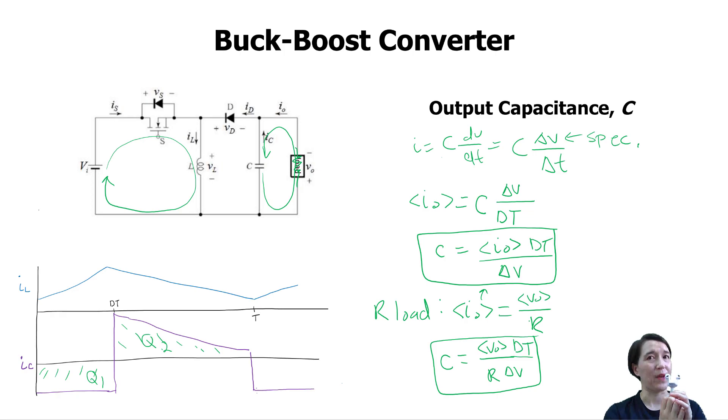And if we want to make it more specific to a resistor load, then we can put in the resistance value, and then we need to know the output voltage, and you can calculate that separately and put that in there. So there you go, the buck-boost converter output capacitance.